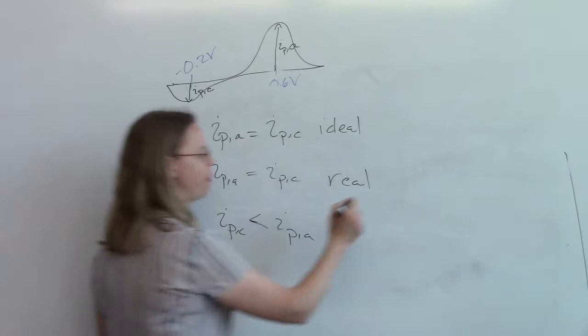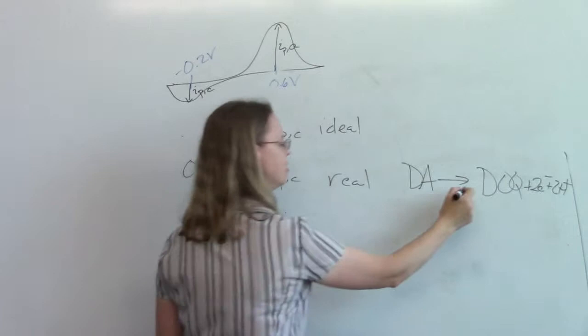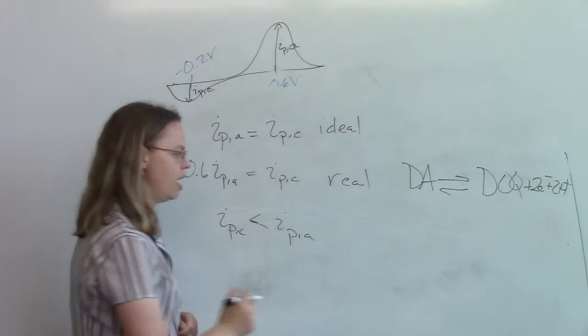And so we have to go back to our idea of dopamine and our redox reaction. This is a reversible reaction when we write it as such. Dopamine going to dopamine orthoquinone.